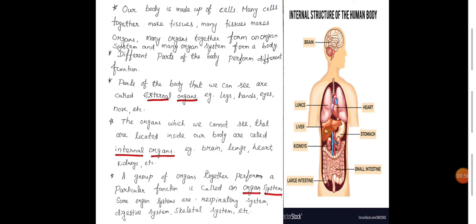Our body is made up of small cells. Many cells together make tissues. Many tissues make organs. Many organs together form an organ system and many organ systems form a body. Different parts of the body perform different functions.